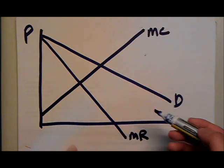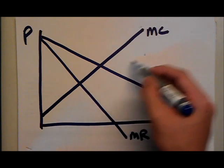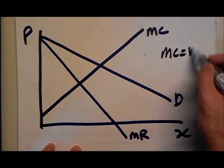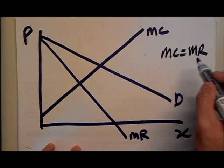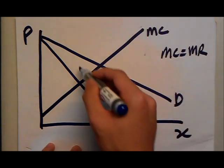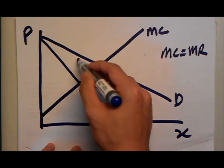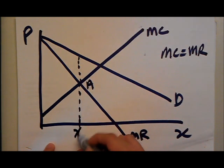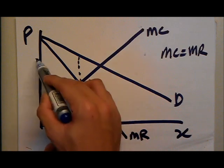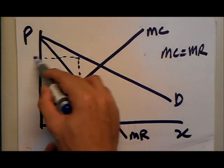How the monopolist determines his selling price is where MC equals MR. This is the profit maximization output. You just identify the intersection point, we will name it A, draw a vertical line down. So the monopolist will produce here at x0 and it will charge at this price.